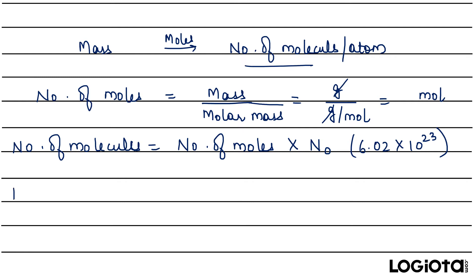Now suppose you need to calculate number of atoms. If you want to know the difference between these two calculations, you can go through a topic which I have already put a video — I will put a card above so you can click on that link and see that video. To calculate the number of atoms, it will be X multiplied by number of moles multiplied by Avogadro's number.